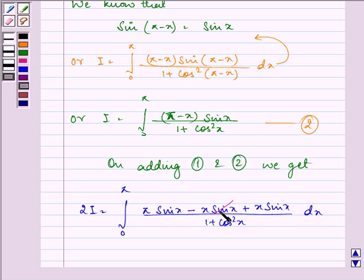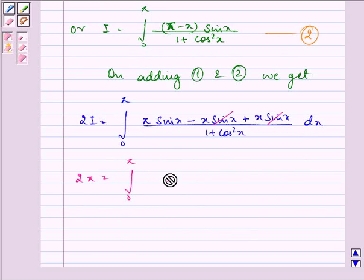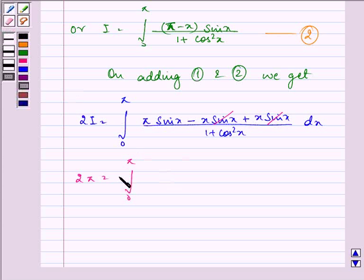Now we have 0 to π, where π is a constant which comes out of the integral sign, giving π times integral of sin x over 1 plus cos²x dx.